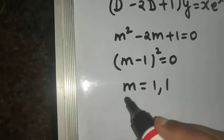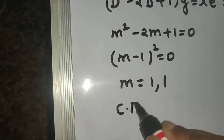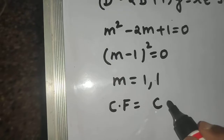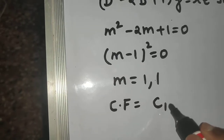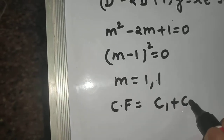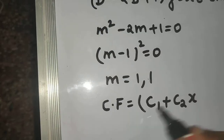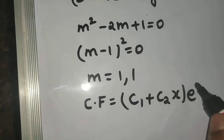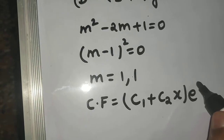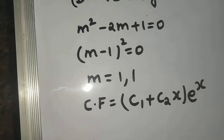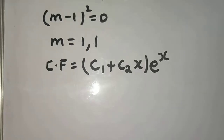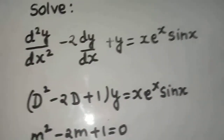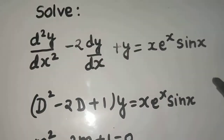Since we have repeated roots, the complementary function is CF = (c₁ + c₂x)·eˣ, where 1 is the repeated root. Now let's move on to finding the particular integral.